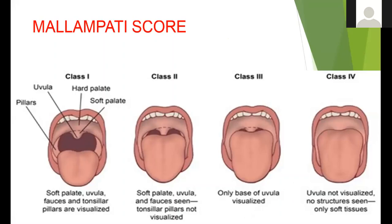This is a very simple maneuver — you simply visualize the patient's mouth, ask them to open it clearly, and evaluate it. You can see class 1 and class 2 as almost clear airway, and class 3 and 4 as difficult airways. This gives you an idea about the patient's airway before you decide to manage them.